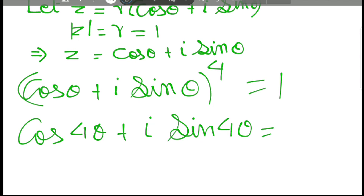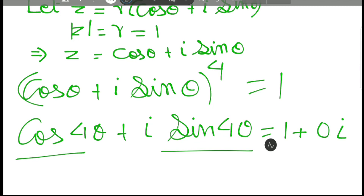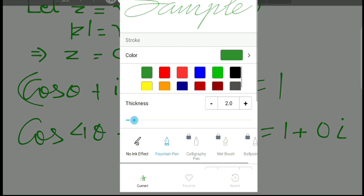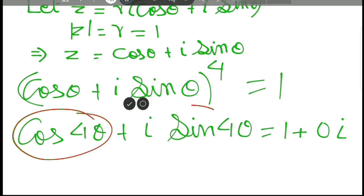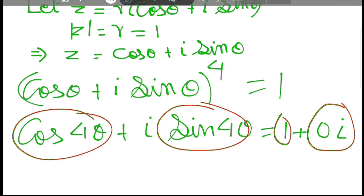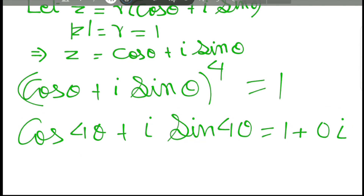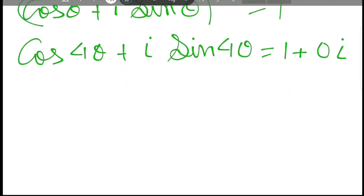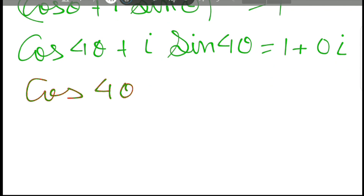And 1 is a special complex number — it can be written as 1 plus 0 times i. We have a complex number on the left-hand side, that is cos theta plus i sine theta, and also on the right-hand side, 1 plus 0i. If we forget i sine theta, then cos theta is just a real number. Here also, if we forget 0i, then 1 is also a real number. So why don't we compare real part and imaginary part?